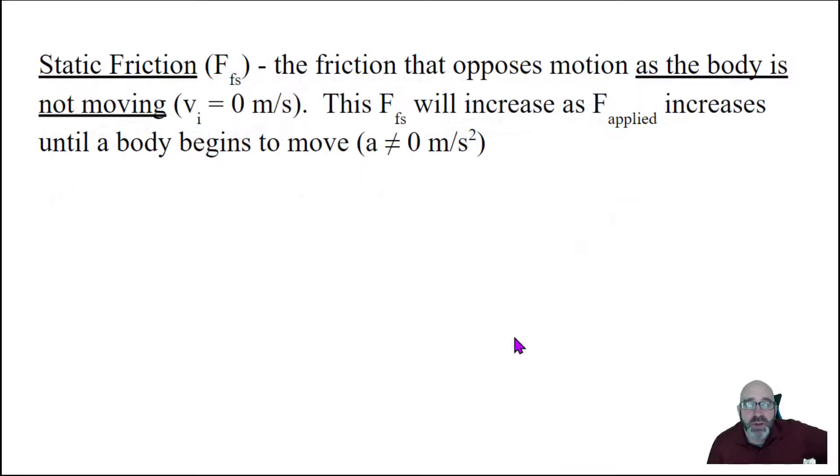So let's focus on this idea of friction. Now it comes in two flavors. The first one we call static friction, or force of friction static. And this is the friction that opposes motion as the body is not moving or at rest. Velocity is zero meters per second. The force of friction static is going to get bigger and bigger and bigger as force applied, as you push, until the body begins to move.